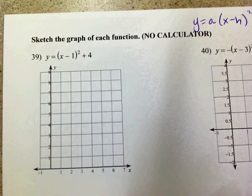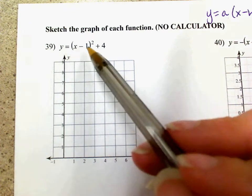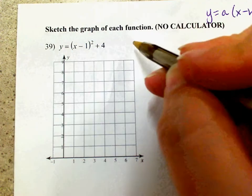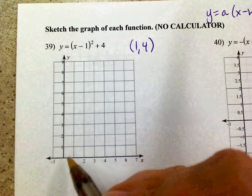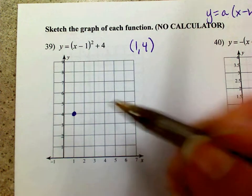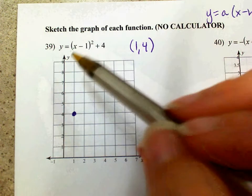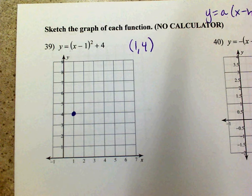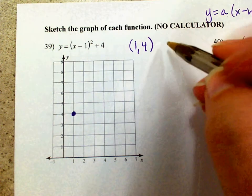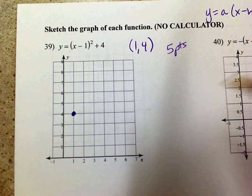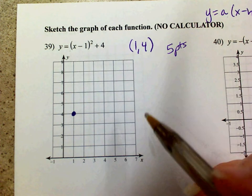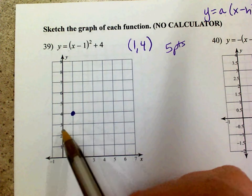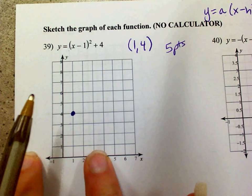All right, let's go ahead and start with number 39. Number 39 says graph y equals (x minus 1) quantity squared plus 4. My vertex is opposite on the inside, same on the outside, so the vertex is at the point (1, 4). I plot a point. This is a positive quadratic, so I know it opens up. The easiest approach is to graph five points — the vertex, the two points directly beside it, and the two outside of that.